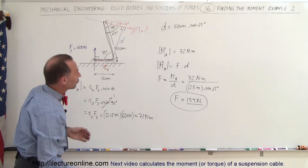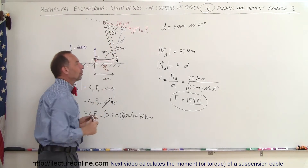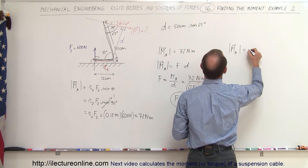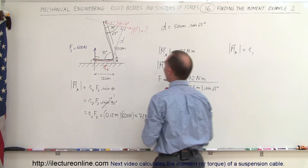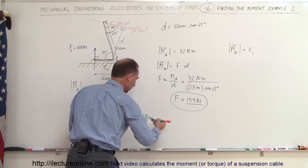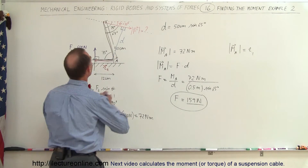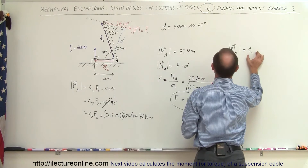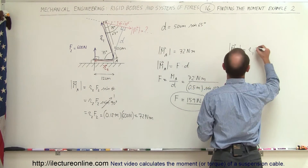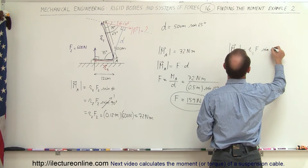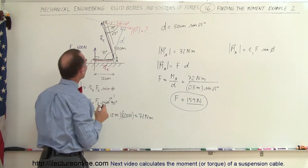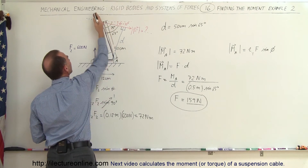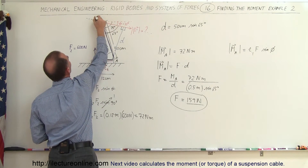Now for a second method using the same idea, but instead of using distance D, we use the following. The moment about point A equals the moment arm R sub 1 times the magnitude of the force times the sine of the angle between them, which we'll call phi. Let me draw the new moment arm R sub 1. We're looking for this angle phi — the angle between the moment arm and the line of force.